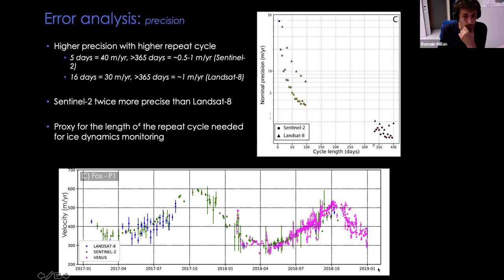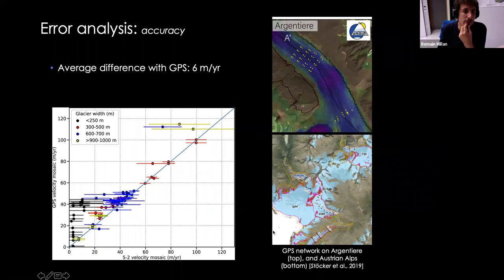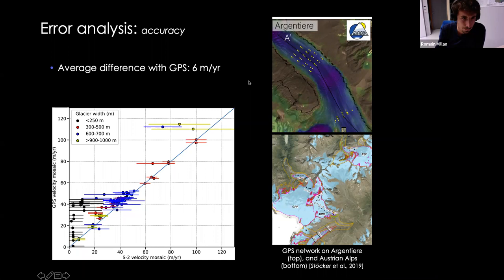At the bottom, you have an example of a time series of ice velocity on the Fox Glacier in New Zealand, where you can clearly see the seasonal pattern captured by all sensors. This illustrates the capacity of Sentinel-2 and Landsat-8 to capture seasonal variations. To quantify the accuracy of the measurements, we use GPS ground measurements in the Alps acquired through the Glacier Climate Observatory at IGE, and a GPS network in the Austrian Alps from Stocker et al. When we compare the GPS to the composite velocity map of 2017–2018, we have an average difference of six meters per year.